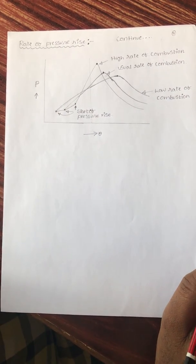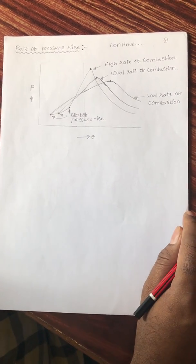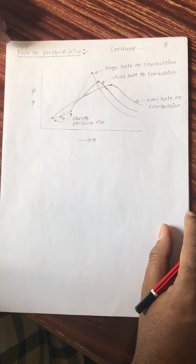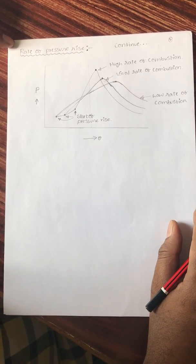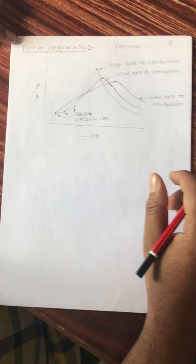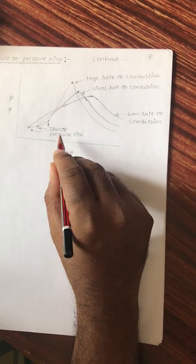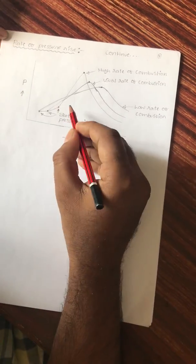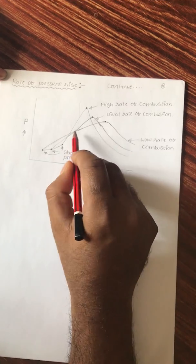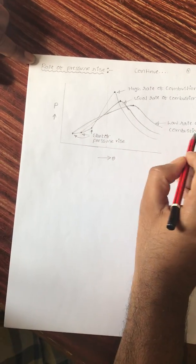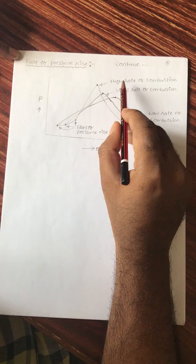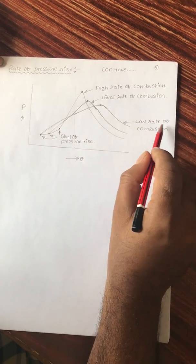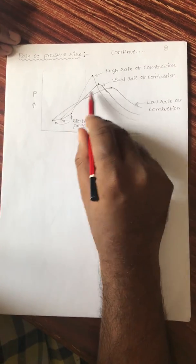Good morning. Welcome to the series of lectures on internal combustion engines. Today we are going to discuss the rate of pressure rise in a spark ignition engine, that is a petrol engine. This is about the effect of compression ratio on combustion rate. There are three combustion rates: a lower rate, a usual rate, and a higher rate of combustion.